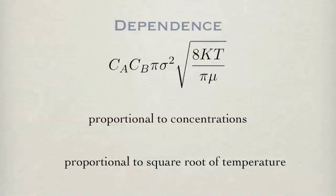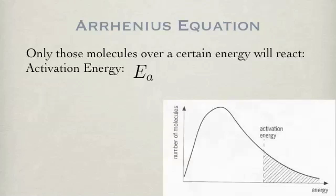So in the final expression, we see the expected dependence on concentrations and also a dependence on temperature. So now we know how often two molecules collide. This is the first prerequisite to a reaction taking place. The molecules have to meet somewhere.